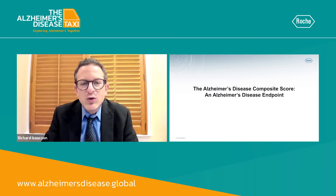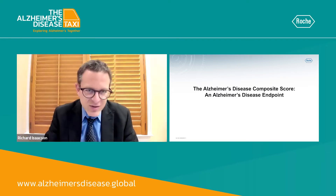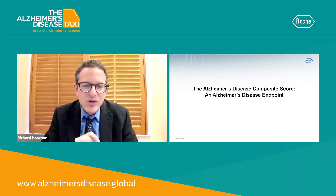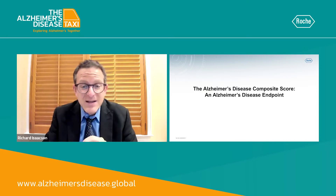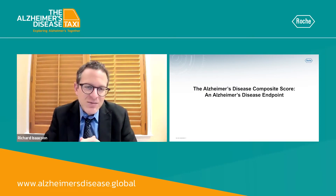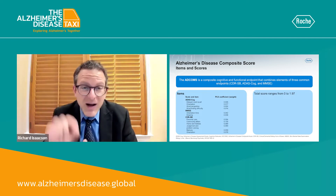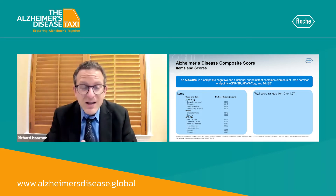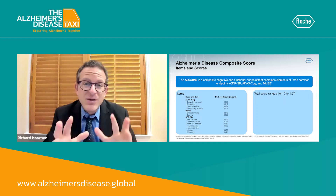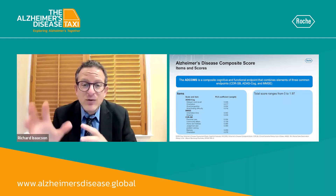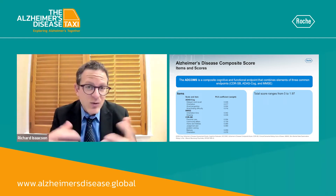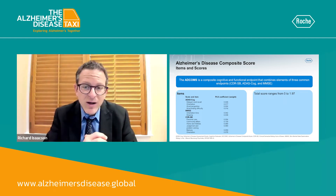Let's talk about one of the newer Alzheimer's disease endpoints called the Alzheimer's Disease Composite Score, or the AD composite score, more commonly known as the ADCOMS. The ADCOMS is a composite cognitive and functional endpoint that combines elements from several different common endpoints that we've probably all heard about.